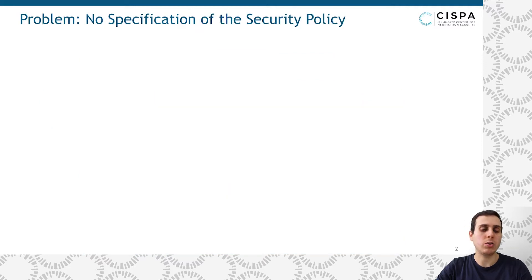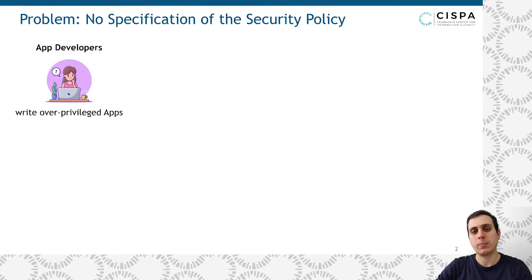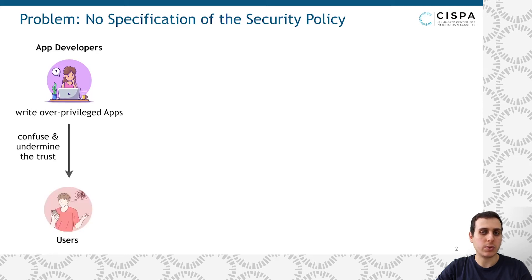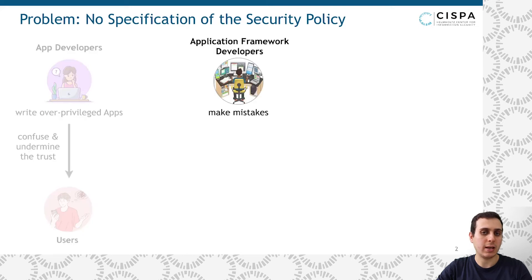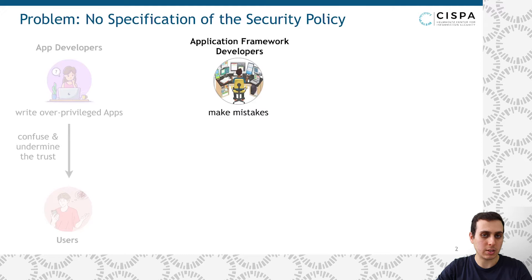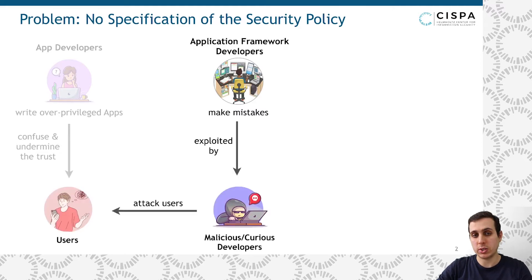All of these security checks combined form the security policy of the application framework. Unfortunately, there is no formal specification of this policy, and this has been problematic for all stakeholders in Android's ecosystem. For example, app developers tend to write overprivileged apps simply because they do not know the optimal set of permissions for the APIs that they use. Those apps would confuse users and erode their trust in the developers. On the other hand, as the application framework developers lose the comprehensive review of the security policy, they are likely to make mistakes such as exposing sensitive APIs without protection or creating conflicting policies.